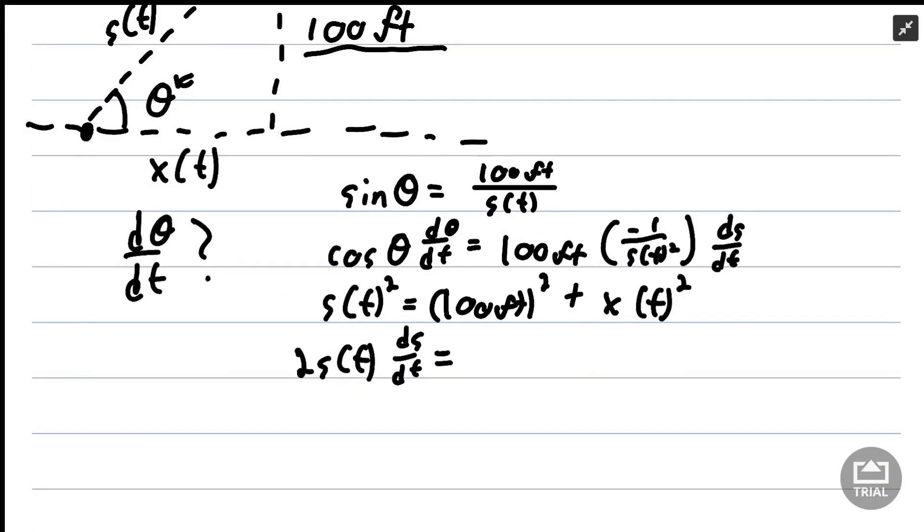On the right-hand side, this coefficient 100 feet squared is not changing so it won't appear in our derivative. The derivative of x(t) squared, just like on the left-hand side, is 2 times x(t) times dx/dt from the chain rule.